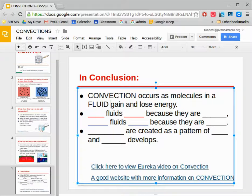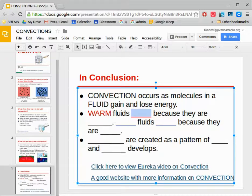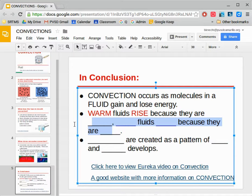That's where we can see convection. Now, looking at the different kinds of fluids, we have warm fluids. Warm fluids rise because they are less dense. The molecules are more spread out, so they rise up to the top.